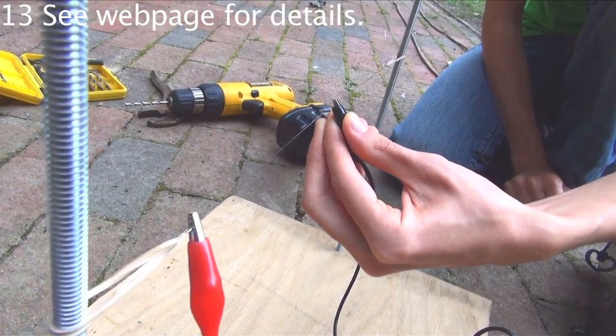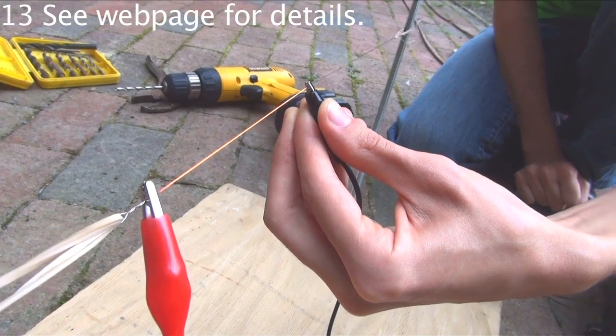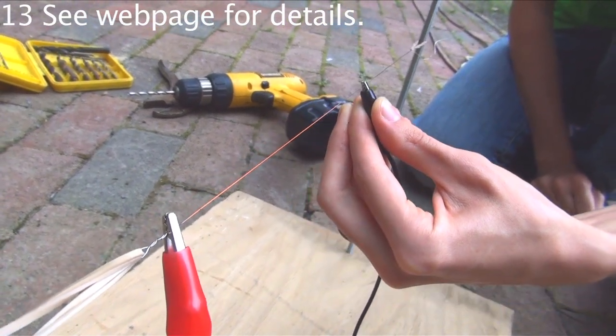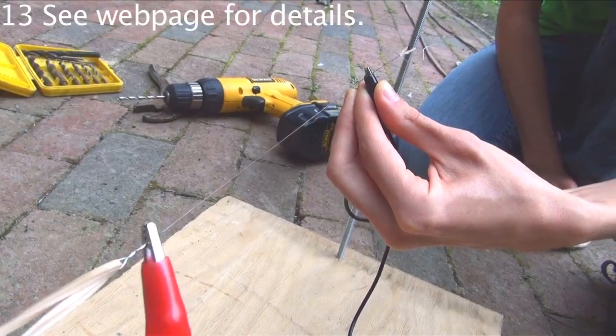If you need to, you can control how hot the wire gets by moving the alligator clips closer to each other. But when the wire glows orange, it's much too hot and can break.